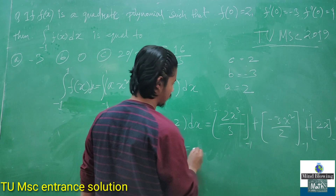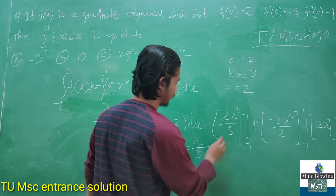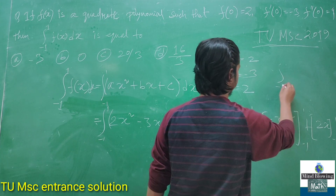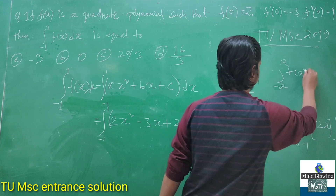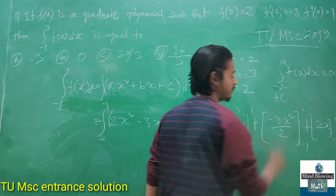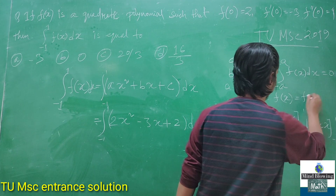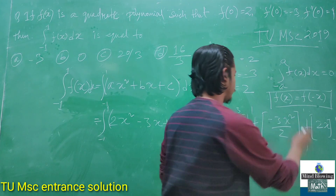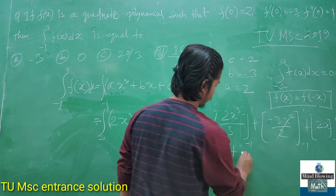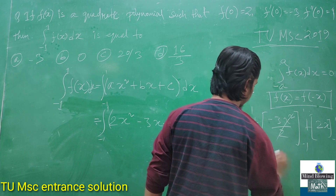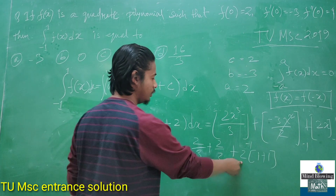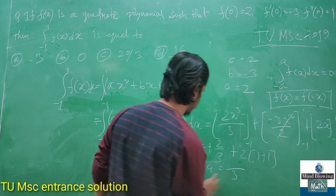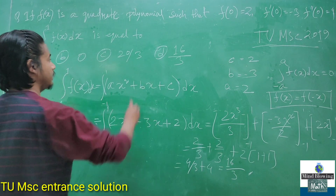We note that -3x is an odd function, and we know that the integral from -a to a of f(x) dx equals 0 whenever f(x) is odd — meaning f(-x) = -f(x). So that part cancels. For the remaining even parts, 2 by 3 plus 2 by 3 gives 4/3, plus 2 into 2 gives 4. So the result is 4/3 + 4 = 16/3. This is the correct answer.